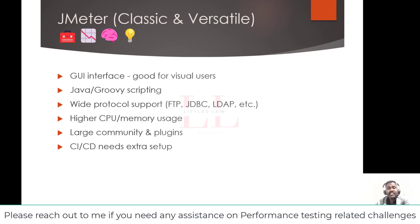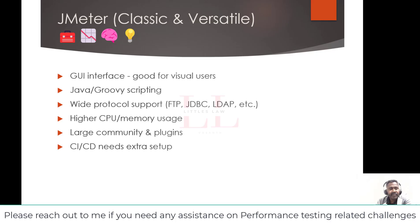JMeter supports a huge range of protocols out of the box: HTTP, HTTPS, FTP, JDBC, LDAP, SOAP, SMTP, WebSocket — you name it. This makes it extremely versatile for testing different types of applications, including older or niche systems. In fact, on the LittleSlaw YouTube channel we have videos covering all of these protocols — HTTP, HTTPS, FTP, JDBC, WebSocket, and more.